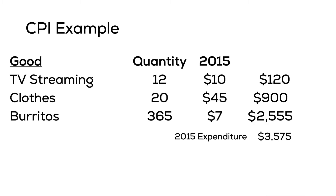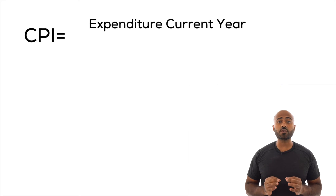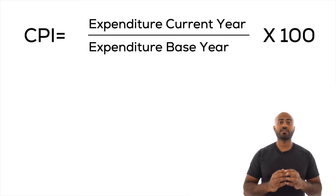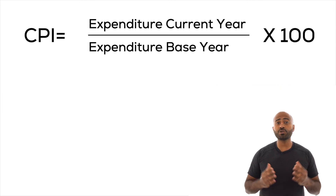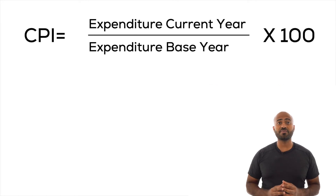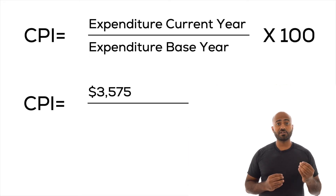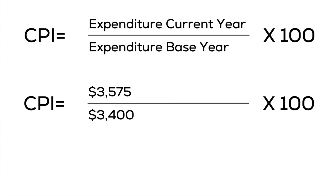We sum the expenditure on each of these goods: our total expenditure on the entire basket of goods is $3,575. To convert this to an index — the CPI — we use the equation: price index equals expenditure on the basket in the current year divided by the expenditure in the base year, multiplied by 100. We assume 2010 is the base year with expenditure of $3,400. So CPI for 2015 is $3,575 divided by $3,400, multiplied by 100, which equals 105.15.